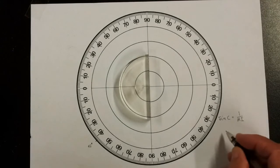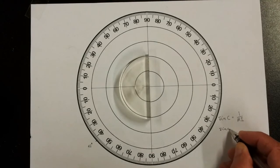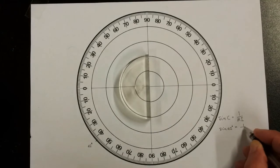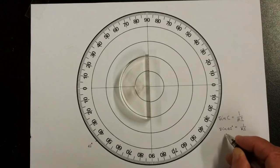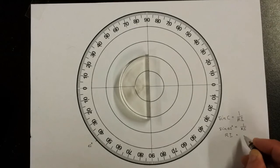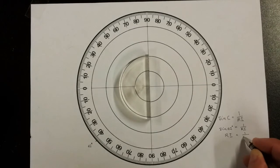So here we've got 42, so sine 42 degrees is equal to 1 over the refractive index, so the refractive index is equal to 1 over sine 42.